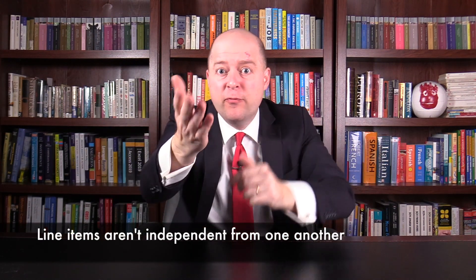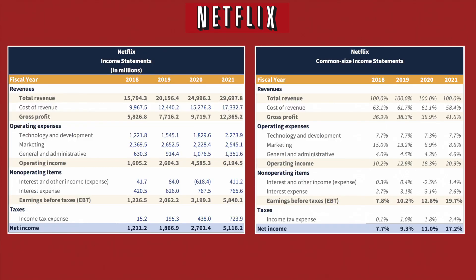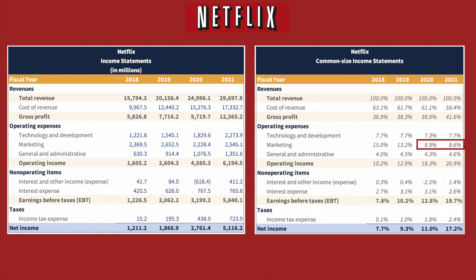But you need to be careful when interpreting a common-size income statement, because the line items aren't independent from one another. A cost might increase on an absolute basis but decrease as a percentage of sales. For example, Netflix's marketing costs increased by $300 million from 2020 to 2021, yet Netflix's marketing costs as a percentage of revenue decreased over the same time period.